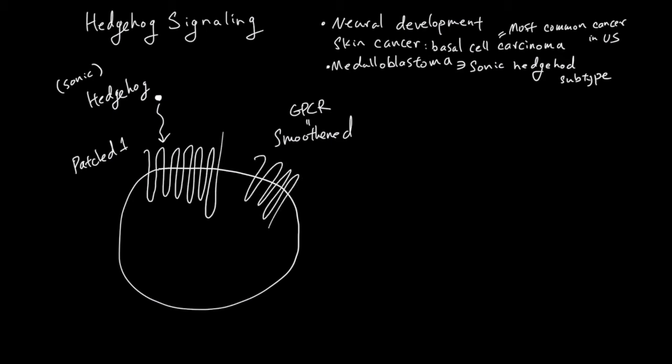1, 2, 3, 4, 5, 6, 7. And when hedgehog is not bound, patched1 is actively suppressing smoothened from working.